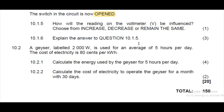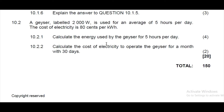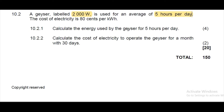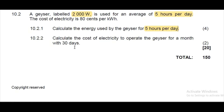We also have to give an explanation for our answer. The second part of the question involves a geyser rated 2000 watts used for an average of five hours per day. The cost of electricity is 80 cents per kilowatt-hour. We must calculate the energy used for five hours a day and the cost to operate the geyser for a month of 30 days.